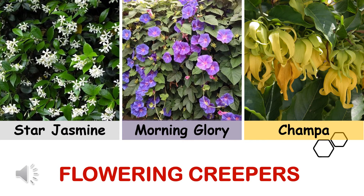Some flowers also grow on creepers. A creeper is any plant that grows around another plant or up a wall by means of extending its stems or branches. Some of the examples of flowering creepers are star jasmine, morning glory and champa.